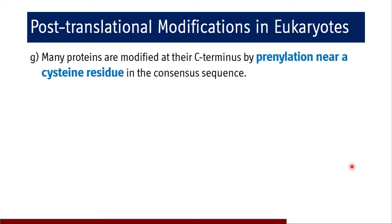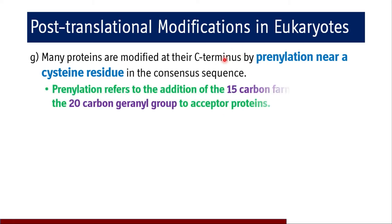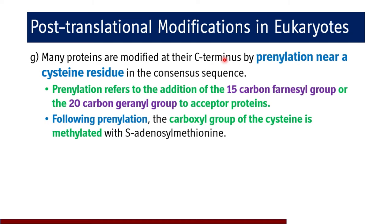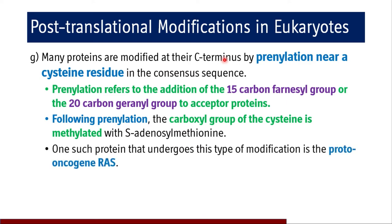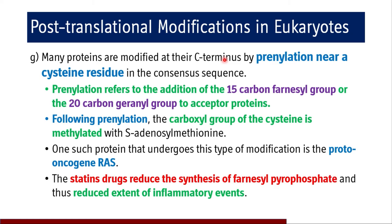Many proteins are modified at their C-terminus by prenylation near a cysteine residue in the consensus sequence. Prenylation is the addition of a 15-carbon farnesyl group or a 20-carbon geranylgeranyl group to the acceptor protein. Following prenylation, the carboxyl group of the cysteine is methylated with S-adenosyl methionine. One such protein that undergoes this modification is the proto-oncogene RAS. Statin drugs reduce the synthesis of farnesyl pyrophosphate and thus reduce the extent of inflammatory events.